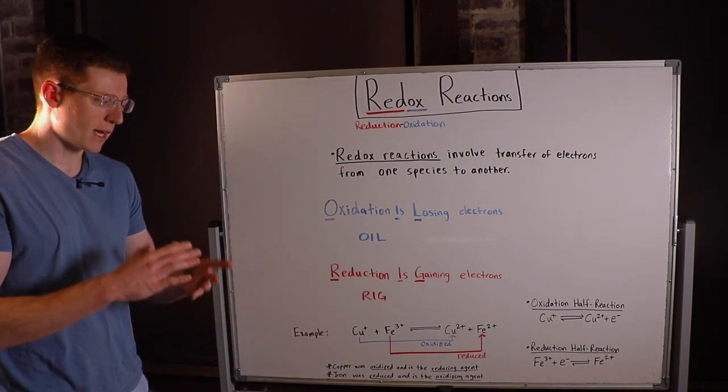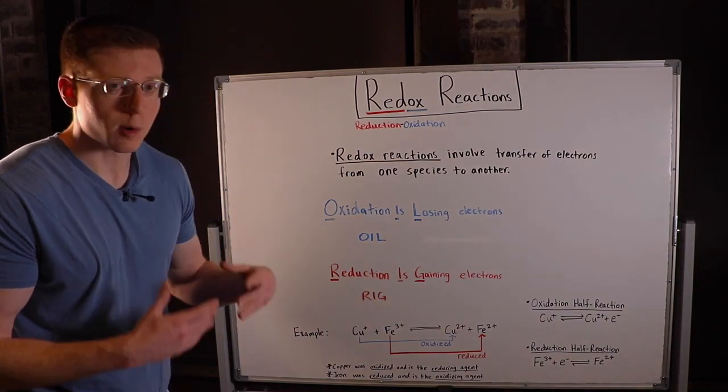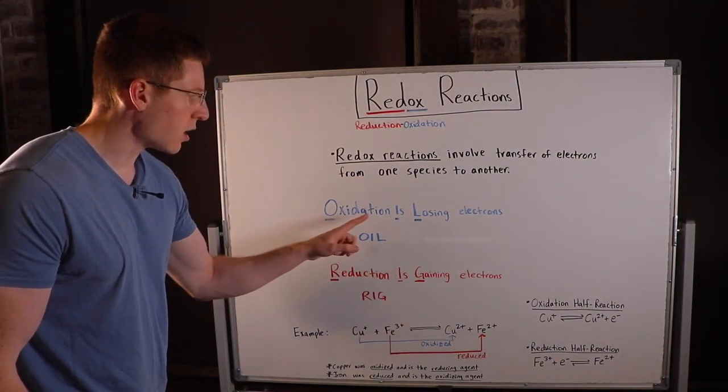When you lose an electron, which is negatively charged, your charge goes up or becomes more positive by one. That means copper was oxidized. It lost electrons.